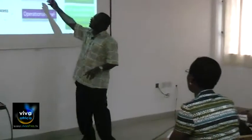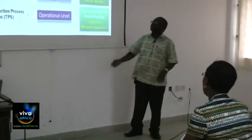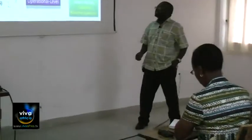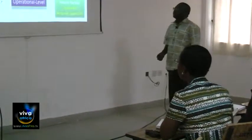Then you have knowledge level systems. These include office systems and knowledge work systems. Office systems are the very basic office applications you use — you type out your work, use Excel to produce other types of information, word processing systems, and so on.